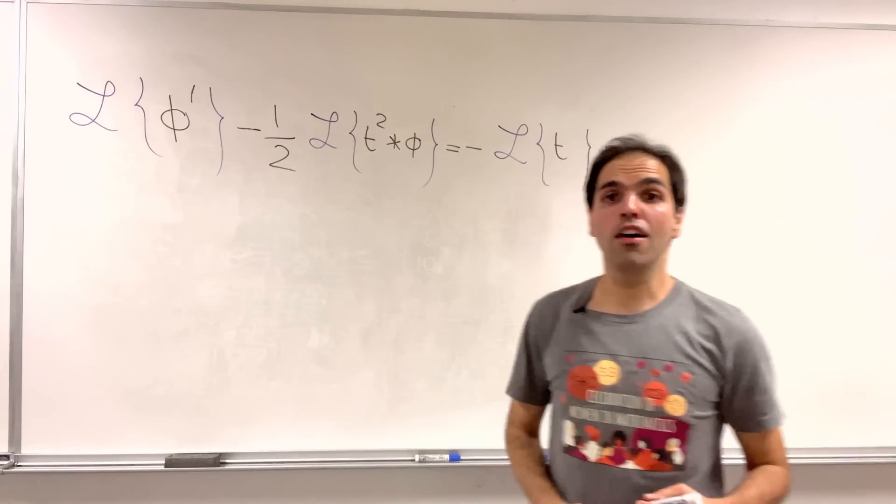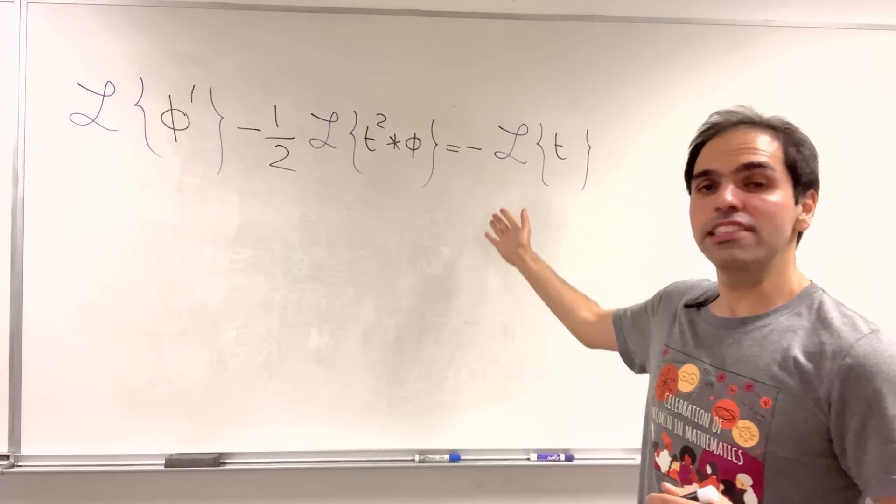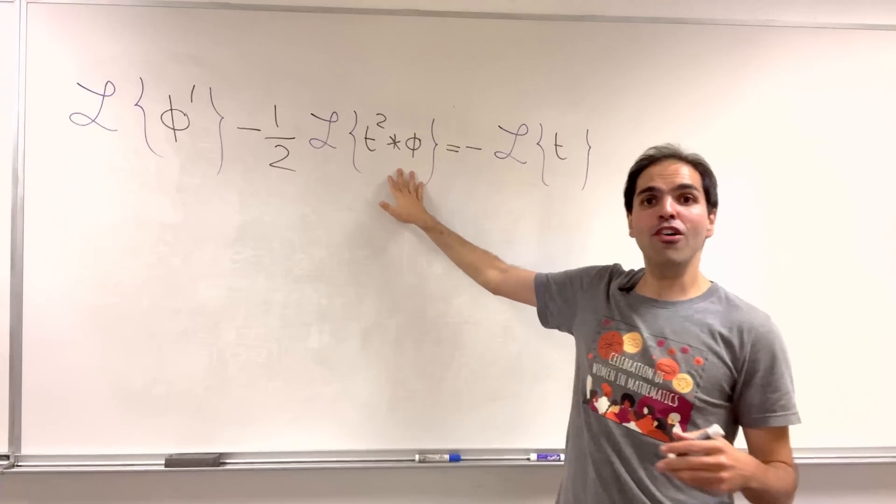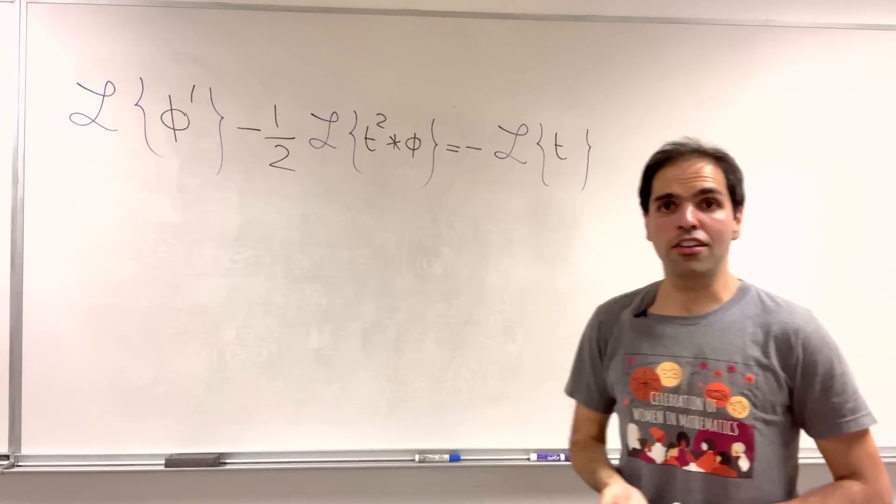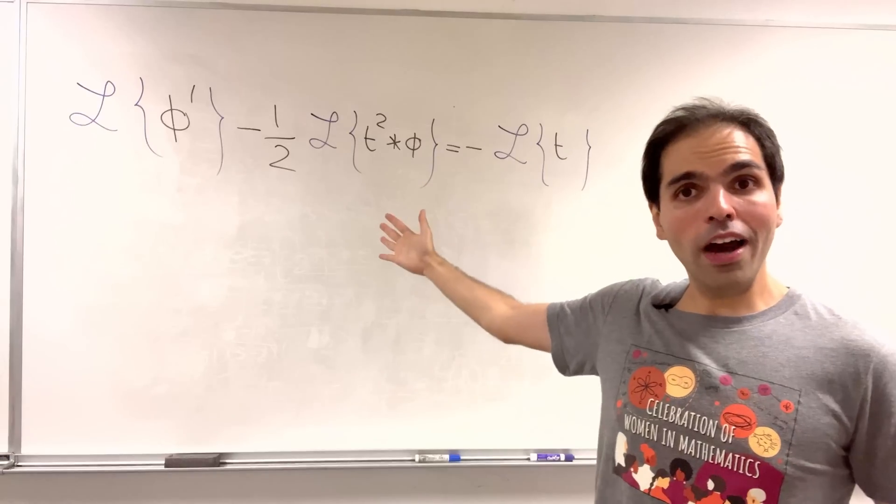So, beautiful L of phi prime minus one-half beautiful L of this ugly convolution equals minus beautiful L of t. Now, what is L?